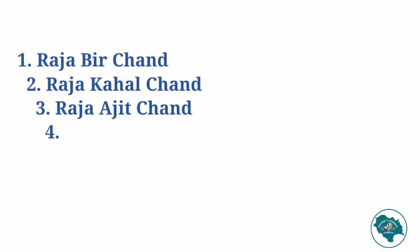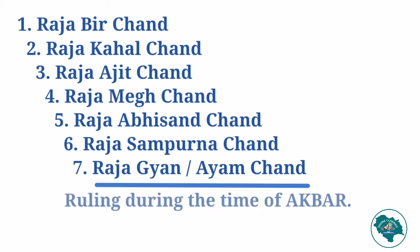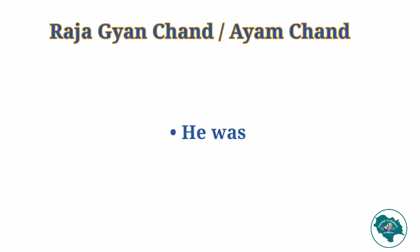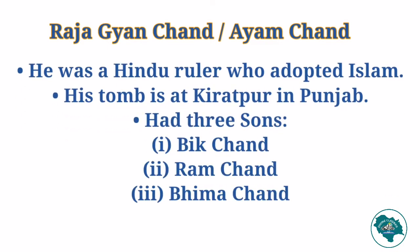After him came Raja Gyanchand or Aayamchand in 1570 AD. He was ruling at the time of Akbar and adopted Islam. His tomb is still there at Kiratpur in Punjab. He had three sons: Bikchand (the elder son), who remained Hindu, and younger sons Ramchand and Bhimachand, who also converted to Islam.